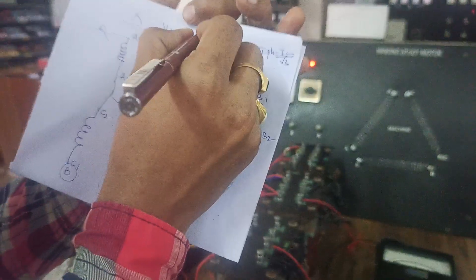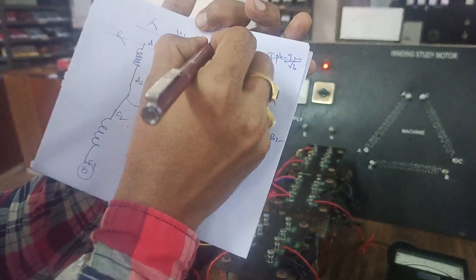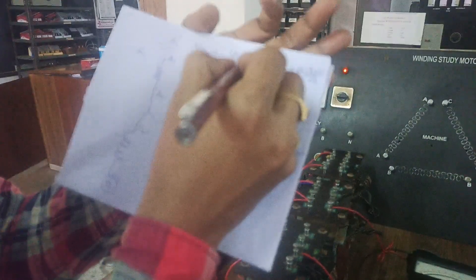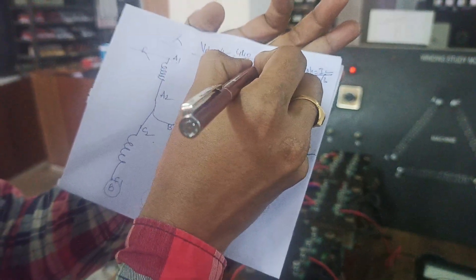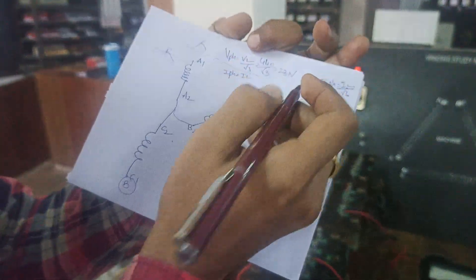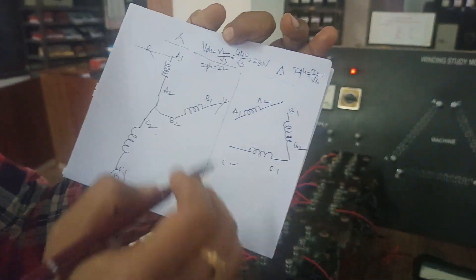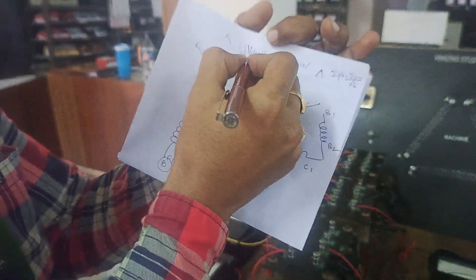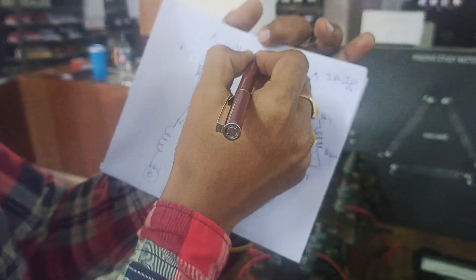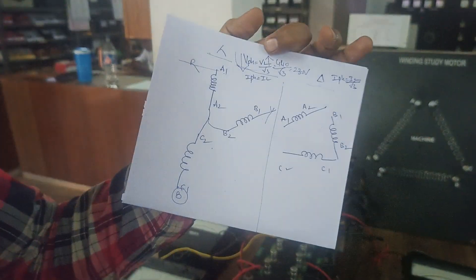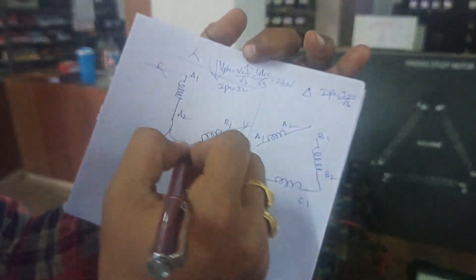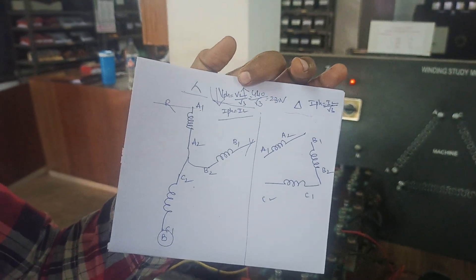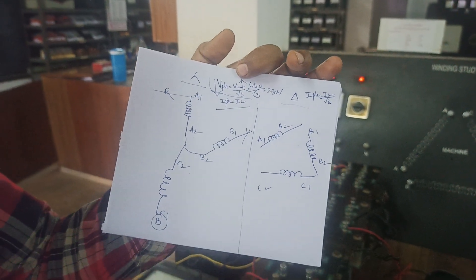The advantage of star connection is that the phase voltage is root 3 times the line voltage. For example, line voltage generally available in the supply is 440 volts divided by root 3, which gives you the phase voltage as 230 volts. Phase voltage magnitude is lower, line voltage is higher, and since they are connected in series, phase current is equal to line current.